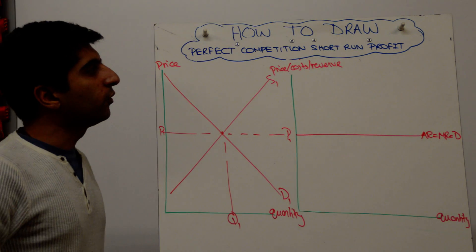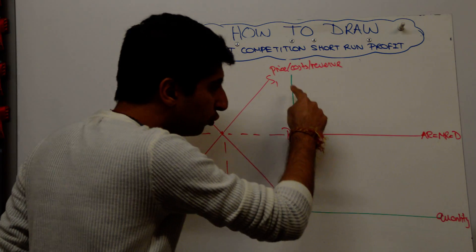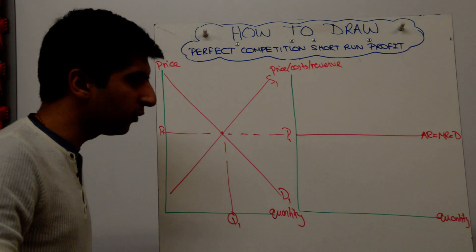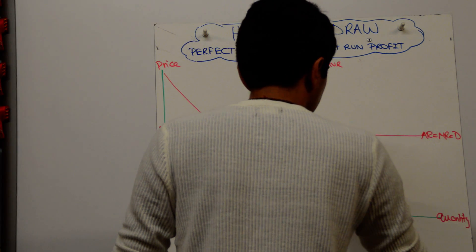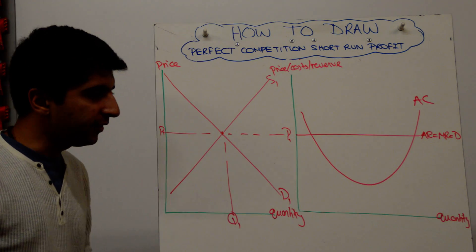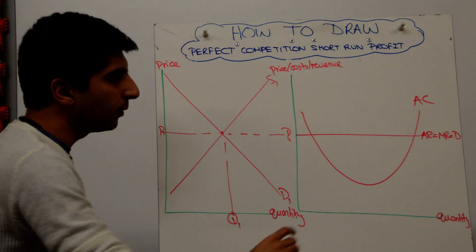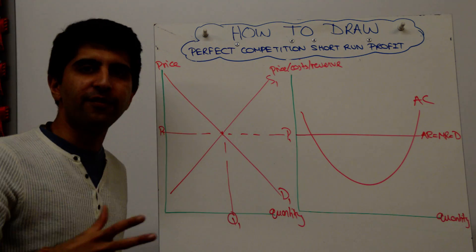Now you want to show short-run supernormal profit. So your AC curve, draw it quite low on the diagram. And this will be very helpful. So look at me do it here. You see how low I've let it go on the diagram? This is going to be quite useful later on. It will just mean that your quantities can differ quite significantly.